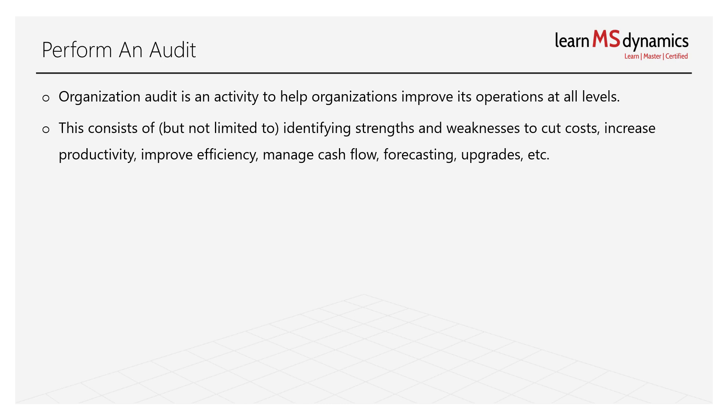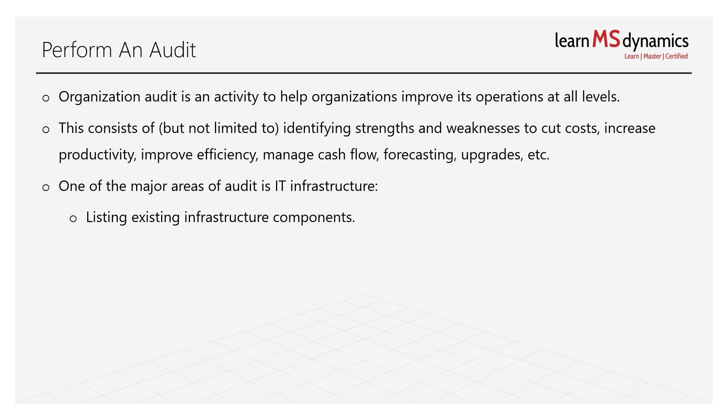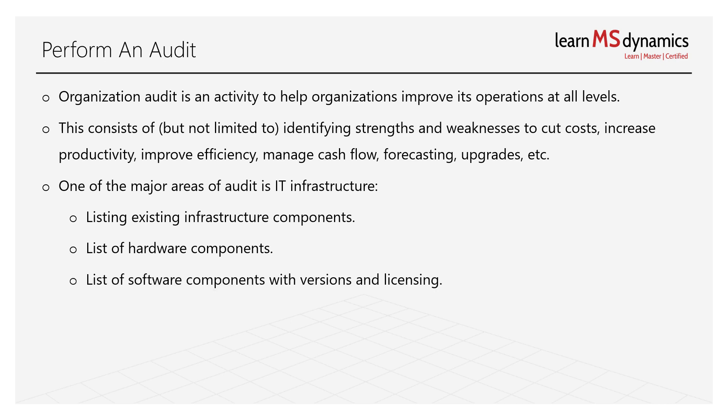One major area of audit in any organization is IT infrastructure. This includes listing existing infrastructure components, hardware components, and software components — along with their versions and licensing. It's important to know not just what software you're using, but also which version you're working with and how many licenses you have for each particular software.